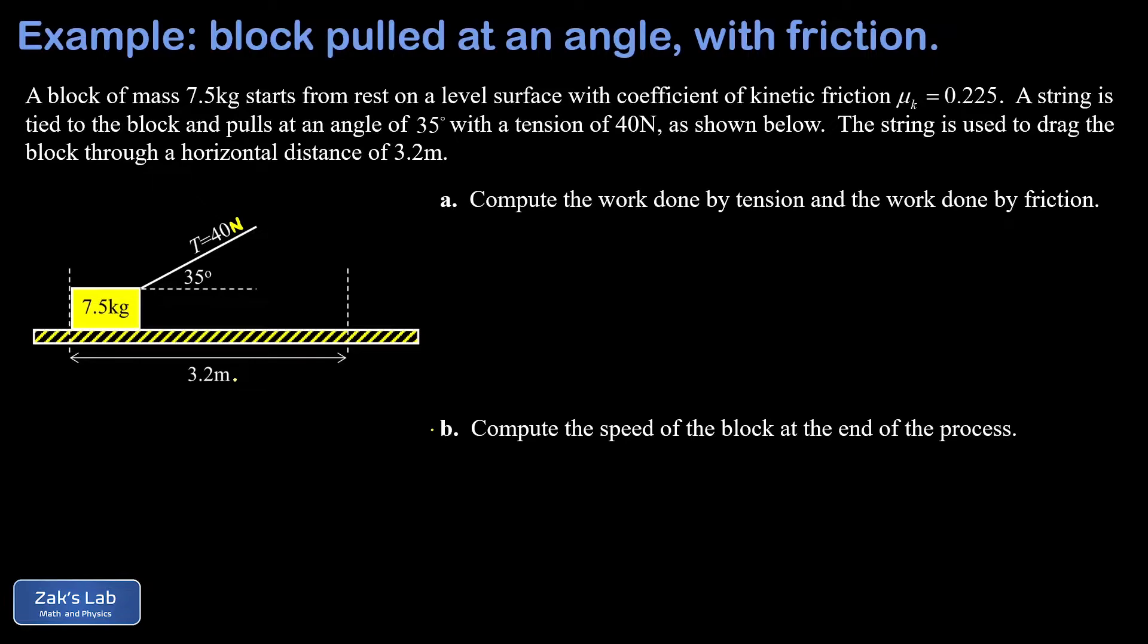A key starting point here is to decompose that tension into its components. Our x component is given by 40 times the cosine of 35 degrees, this gives us about 32.8 Newtons. Our y component - that's 40 sine 35 - and this gives us 22.9 Newtons.